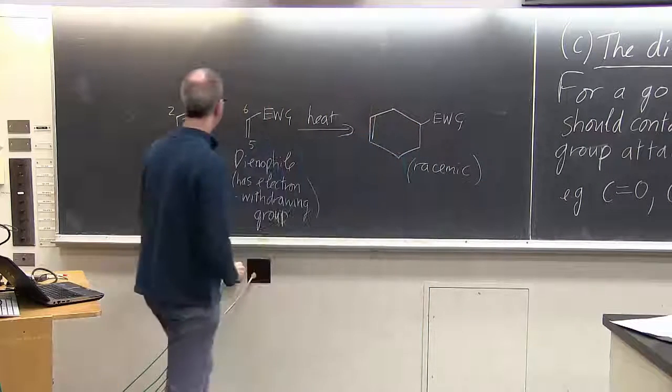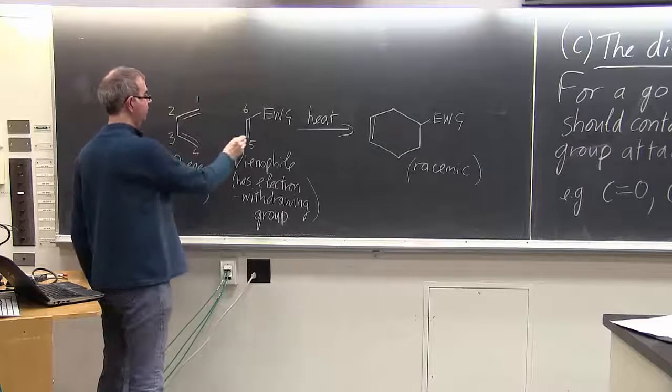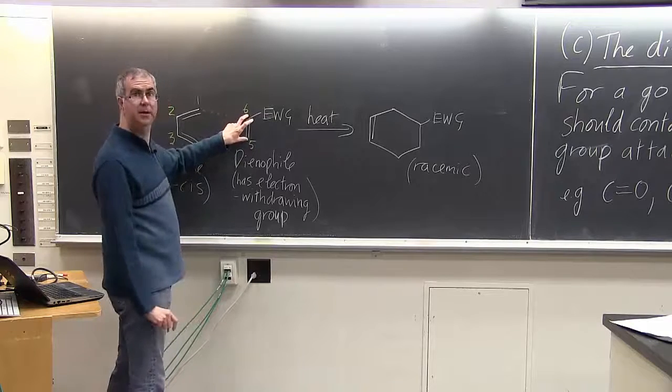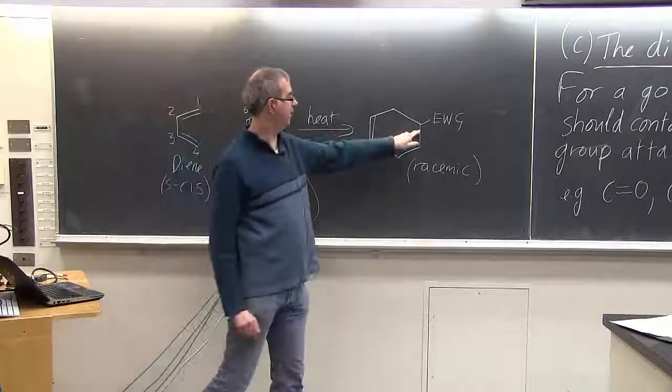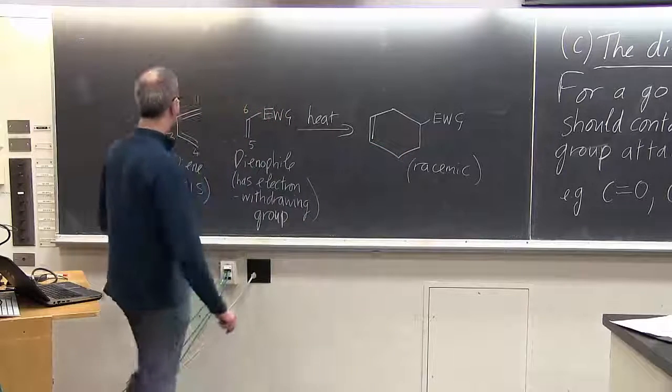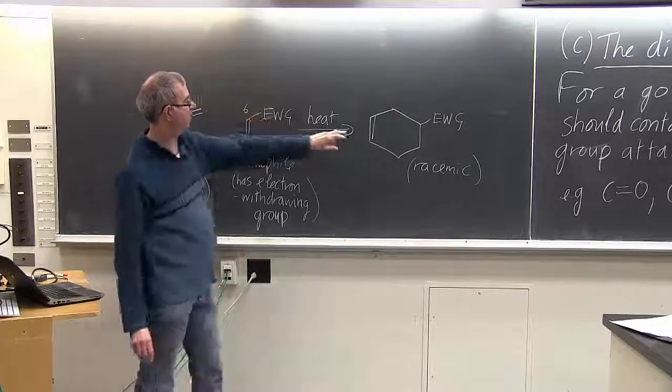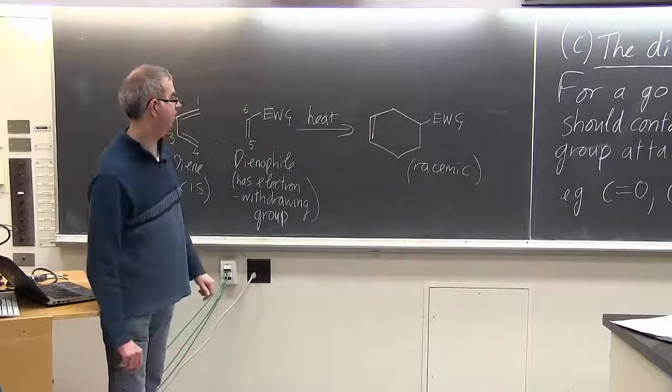And you've formed a new bond between one and six, a new bond between four and five. This dienophile could be an alkyne, in which case you get an extra double bond over here. But if you don't have that, you end up with a simple cyclohexene product. And I think that's about it.